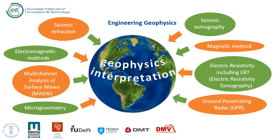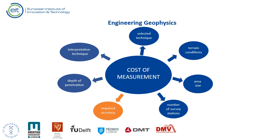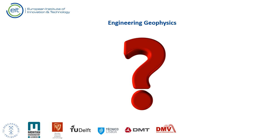Various geophysical methods are combined to enhance the reliability of interpretation. Cost of measurement depends on selected technique, terrain conditions, area size, number of survey stations, required accuracy, depth of penetration, interpretation technique, and relatively low-cost methods. Ambiguity of interpretation makes drilling necessary to confirm the results.